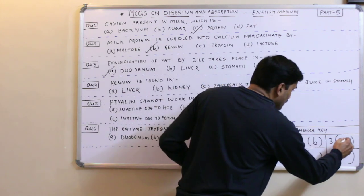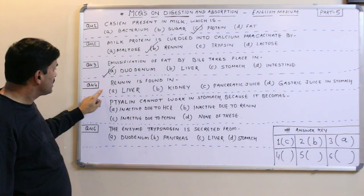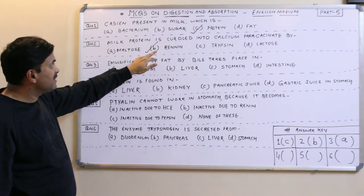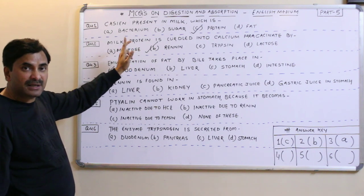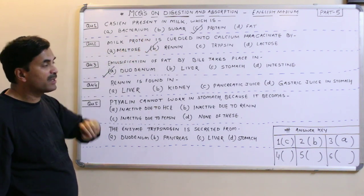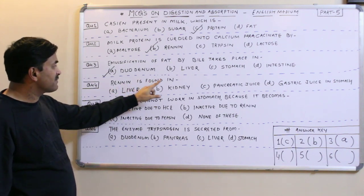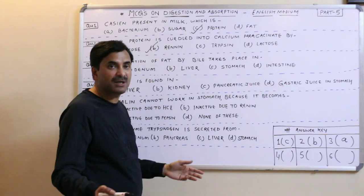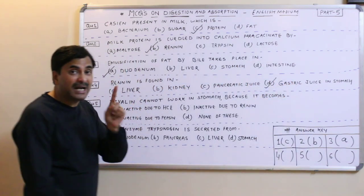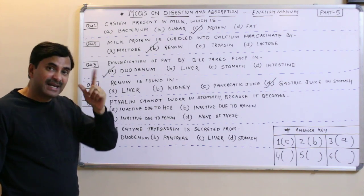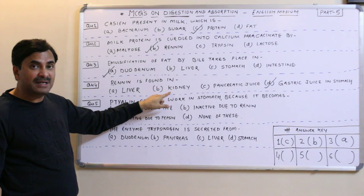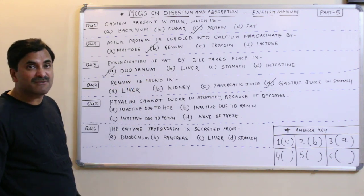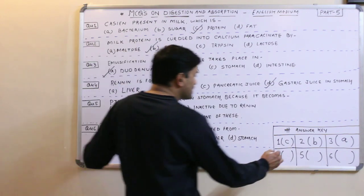Question number four: renin is found in — liver, kidney, pancreatic juice, or gastric juice? We just saw that renin converts milk protein casein into the curd-like substance calcium paracacinate. The spelling here is R-E-N-N-I-N, not R-E-N-I-N. If it were the latter, the answer would be kidney, but this renin is always found in gastric juice in the stomach. So question four has answer D: gastric juice.